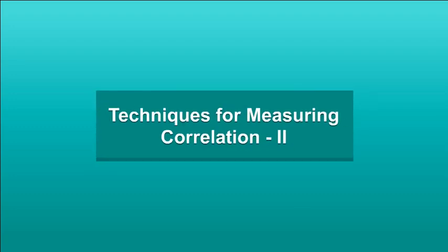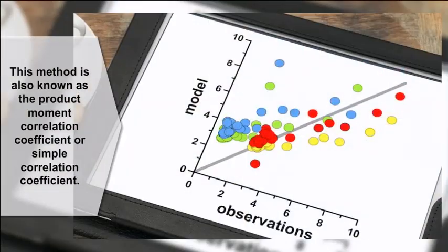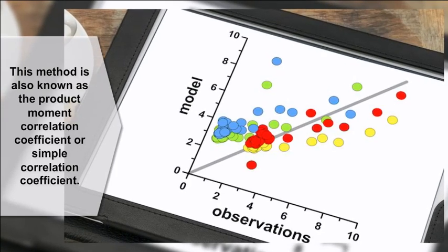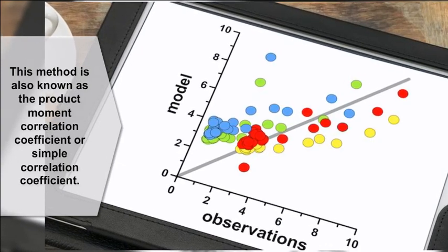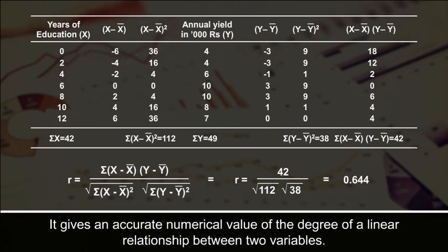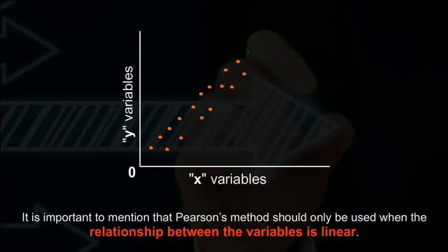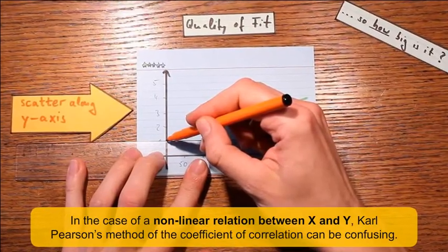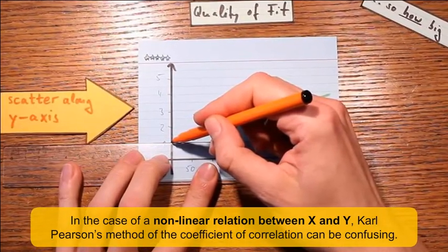Carl Pearson's coefficient of correlation, also known as the product moment correlation coefficient or simple correlation coefficient, gives an accurate numerical value of the degree of a linear relationship between two variables. It is important to note that Pearson's method should only be used when the relationship between variables is linear, as in the case of a non-linear relation it can be confusing.